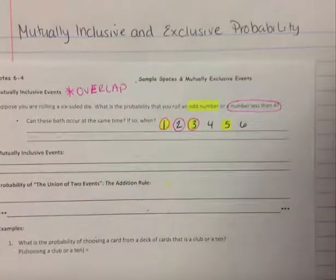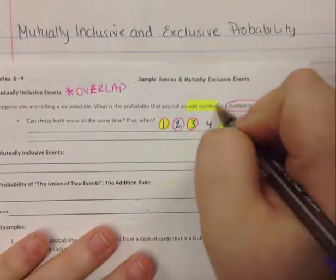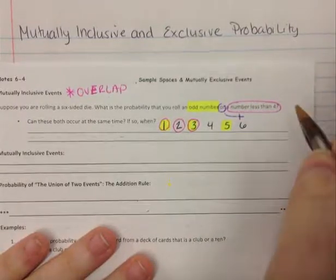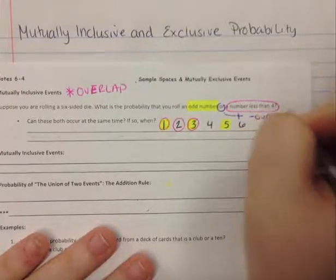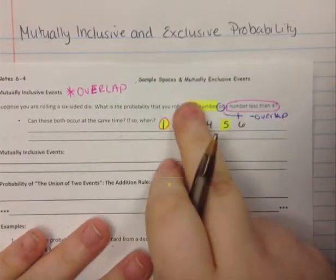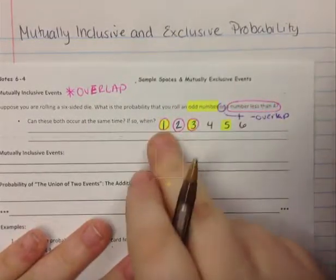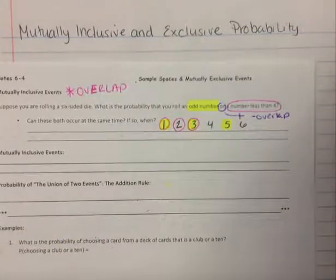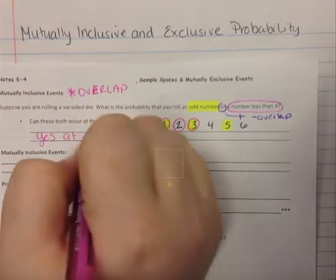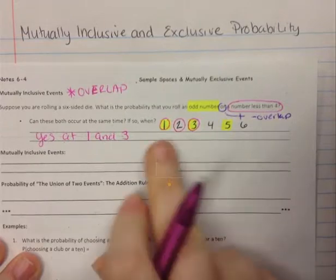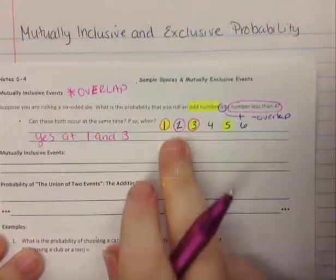Can these occur at the same time? Do we have the yellow highlight and the pink circle happening at the same time? We have yellow and pink at one, only pink at two, yellow and pink at three, and only yellow at five. So we have two times when it's both colors. That means these are inclusive events because they can happen at the same time — they're included together. These occur at the same time at the numbers one and three, so we would end up subtracting two possibilities out of six.